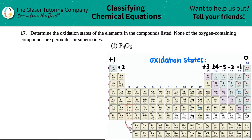Number 17: determine the oxidation states of the elements in the compounds listed, and none of the oxygen-containing compounds are peroxides or superoxides. So thank you for that lovely tip.